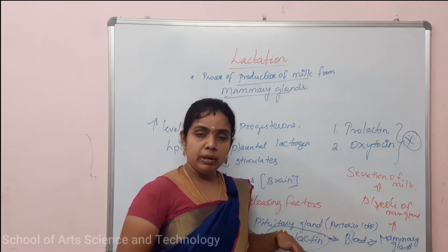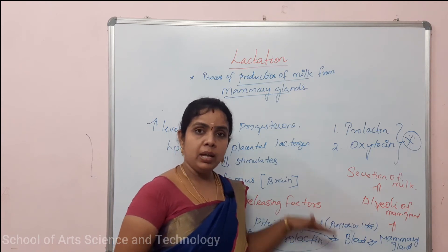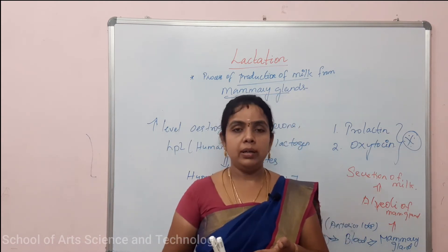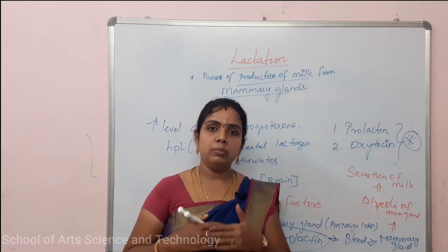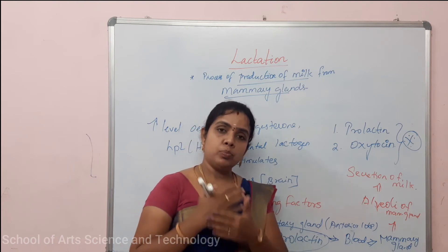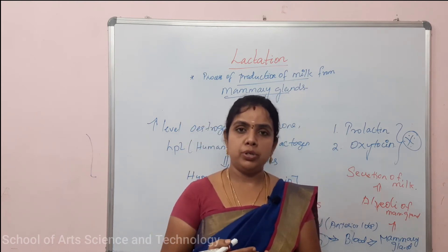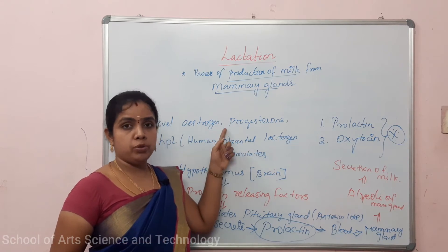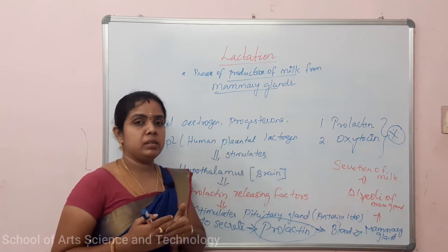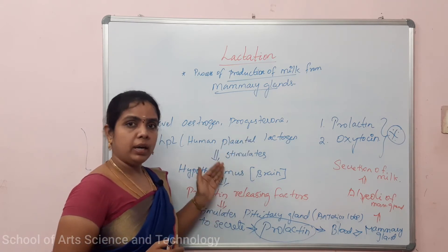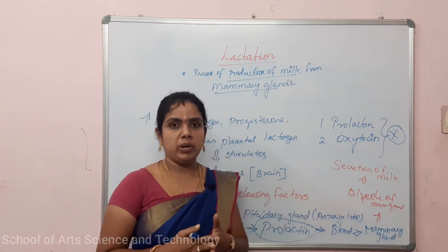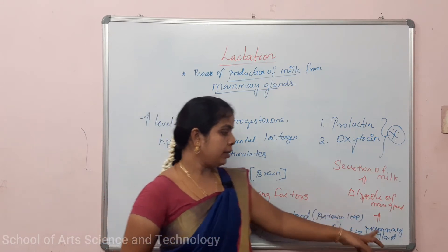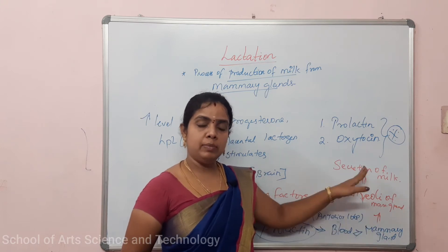During pregnancy, the prolactin hormone is at a high level. The prolactin hormone is very important after parturition. Estrogen and progesterone are very important in pregnancy. Their high-level secretion stimulates the hypothalamus, which causes the release of Prolactin Releasing Factors in the pituitary gland, and the prolactin hormone is released. That prolactin acts on the alveoli cells of the mammary gland and helps in the secretion of milk.